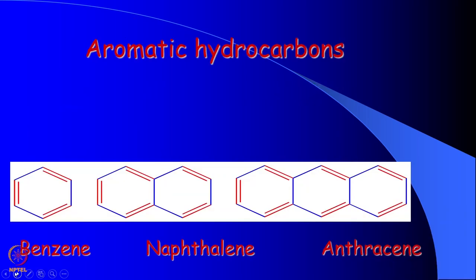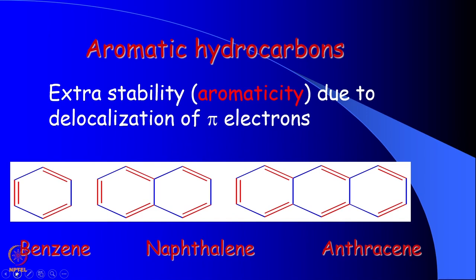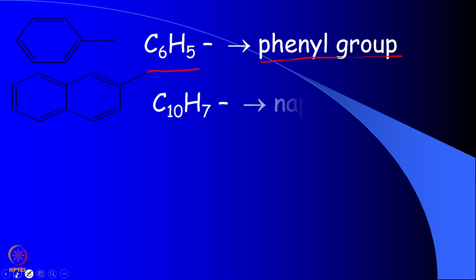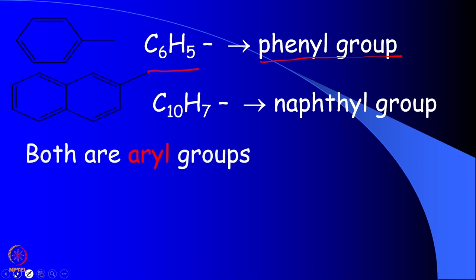The other class of cyclic compounds are aromatic hydrocarbons, including molecules like benzene, naphthalene, and anthracene. Due to aromaticity, these molecules are more stable than some hydrocarbons — they are also called arenes. When a C₆H₅ group is attached to any compound it is called a phenyl group. A naphthalene with one hydrogen removed is called a naphthyl group. These are basically called aryl groups.